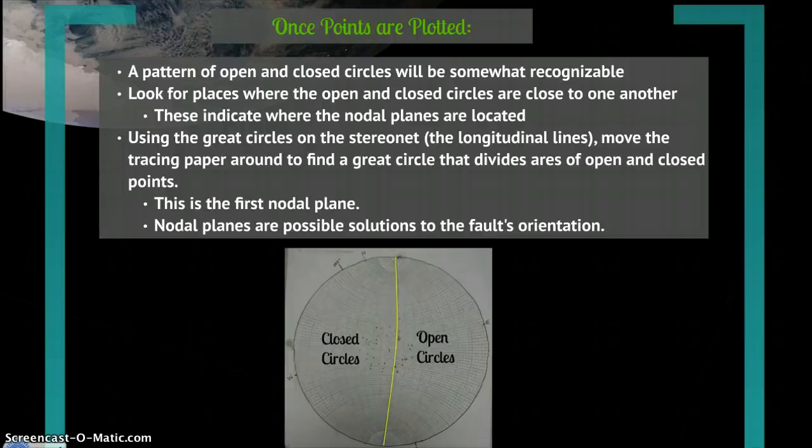The important aspect of the nodal plane is that it divides these open and closed circles, no matter which side of the line they are on. Depending on the fault's geometry, the open and closed points may switch which side of the great circle they are on, but there will still be four distinct areas of open and closed circles. This is okay.